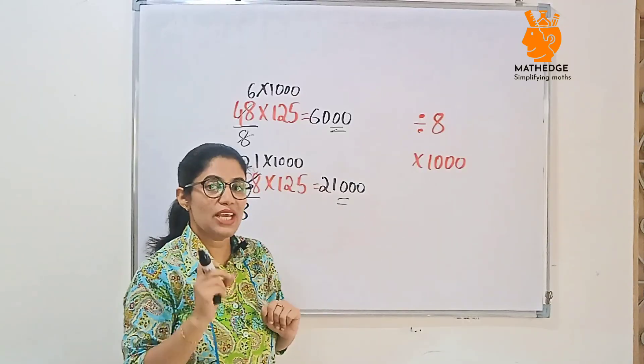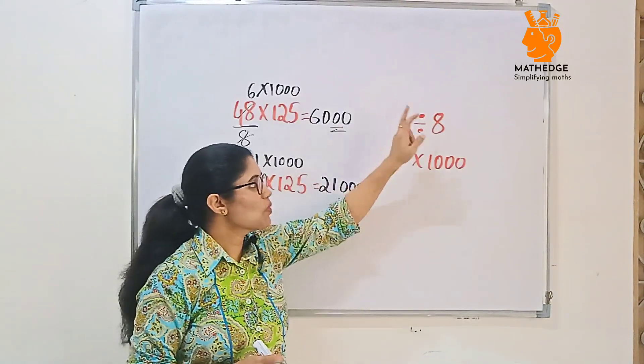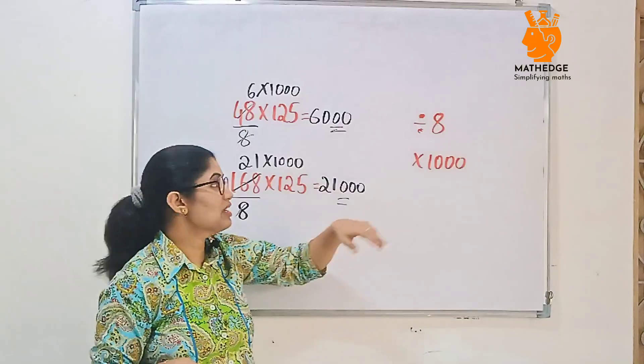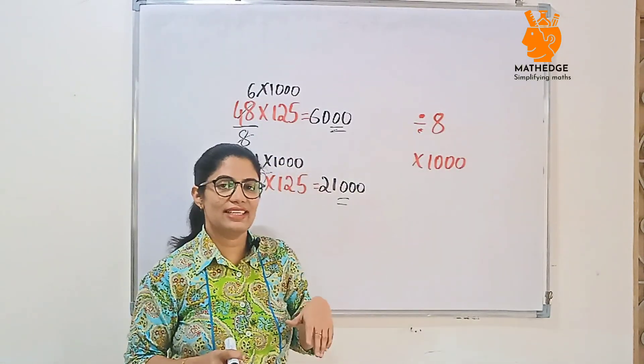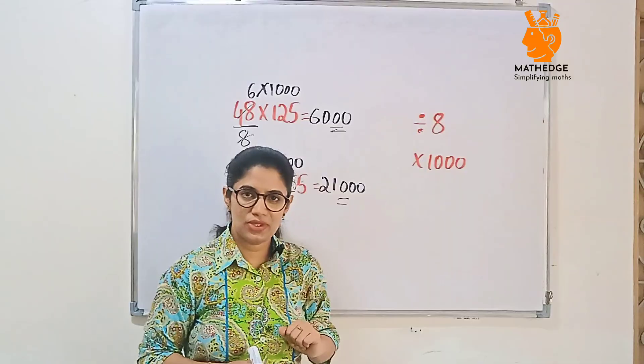Actually, this trick works because 125 is 1 by 8th of 1000. Means, in the place of 125, we can write 1000 by 8. So this trick will work. Same as the above 2 tricks also.